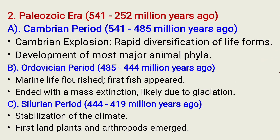The second geological time scale is the Paleozoic Era, known from 541 million years ago to 252 million years ago. It basically has six periods. The first is the Cambrian Period, known from 541 up to 485 million years ago, with events of rapid diversification of life forms as well as development of most major animal phyla.